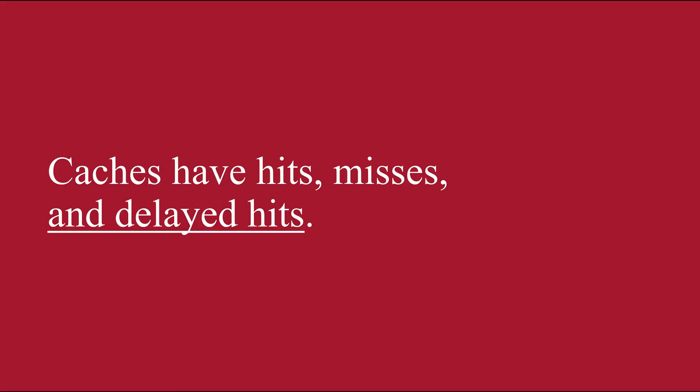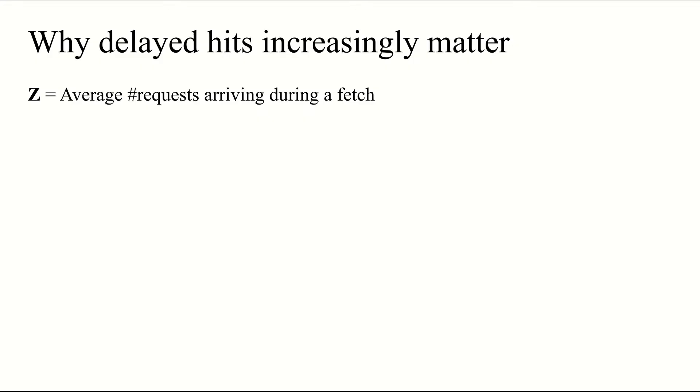It turns out that our caches are impacted by a phenomenon that's becoming increasingly prevalent in today's systems, called delayed hits. The reason delayed hits are starting to increasingly matter is that the average number of requests that can arrive during a fetch, a parameter that we'll call Z, is starting to go up. Numerically, Z is the ratio between the latency to the backing store and the average inter-request time, or IRT. It turns out that this is proportional to the product of backing store latency and link bandwidth.